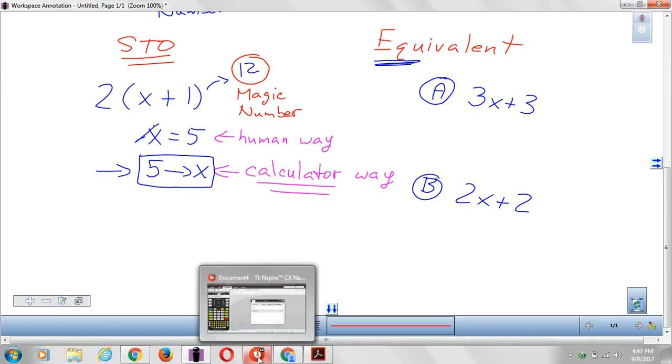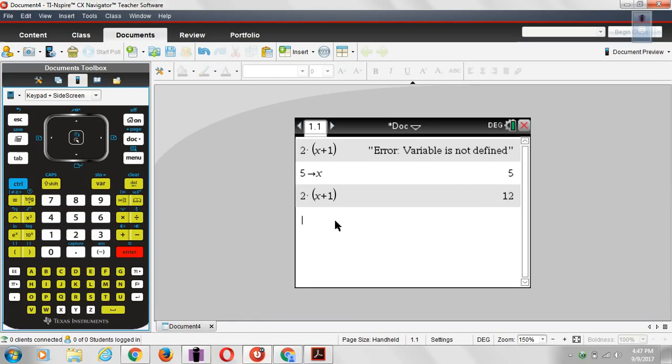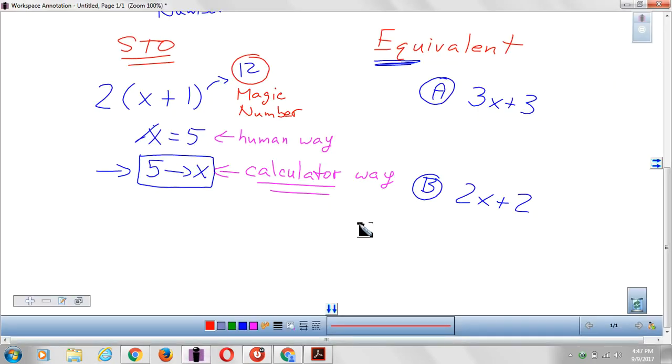And now we'll copy in choice A and we'll see what we get out for that. Now I don't have to tell the calculator again. It still remembers that I'm using the number 5. So let me type in 3x plus 3. You type exactly what you see. Again, the x is bold, and when you hit enter, there's that 18 we saw before. And that 18 tells me very clearly that this guy gave me an 18, which does not match, which does not match my magic number 12.